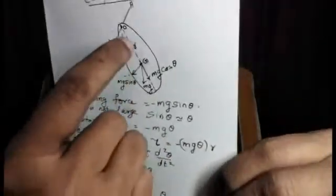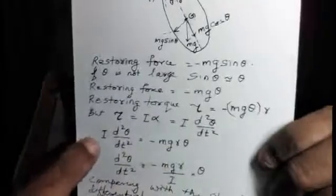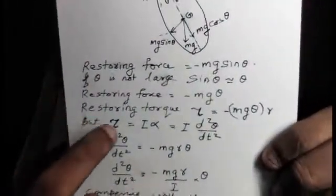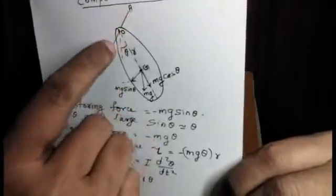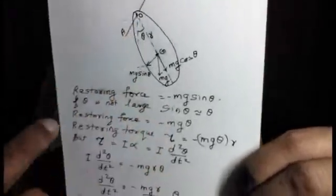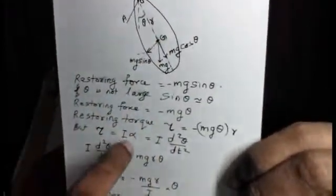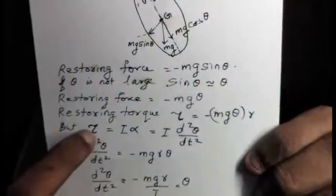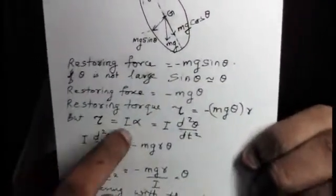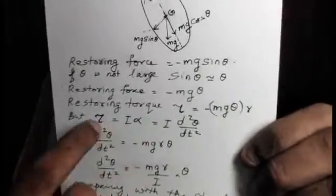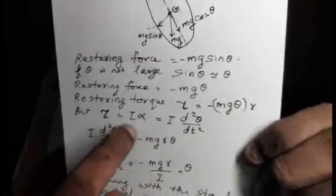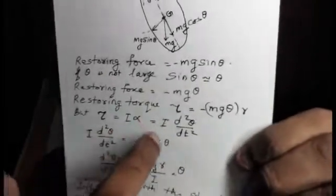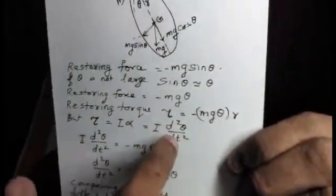So restoring torque is F into R, that is minus Mg theta into R. The torque equals the moment of inertia about this axis AOA dash times angular acceleration. By Newton's law of rotation, tau equals I alpha, which is I into d²theta/dt².